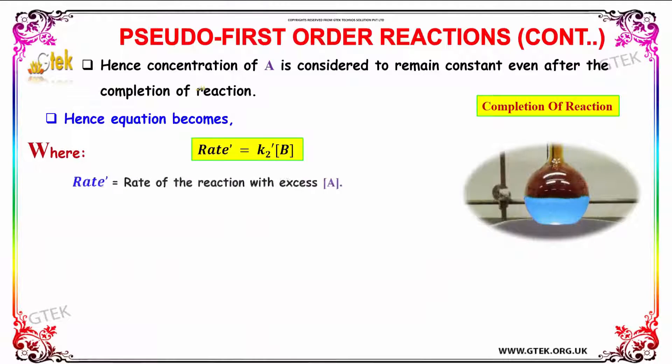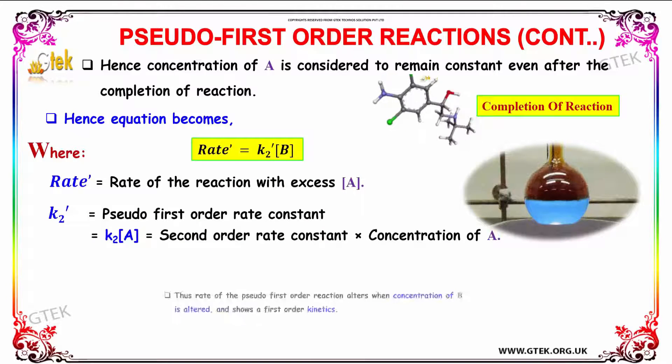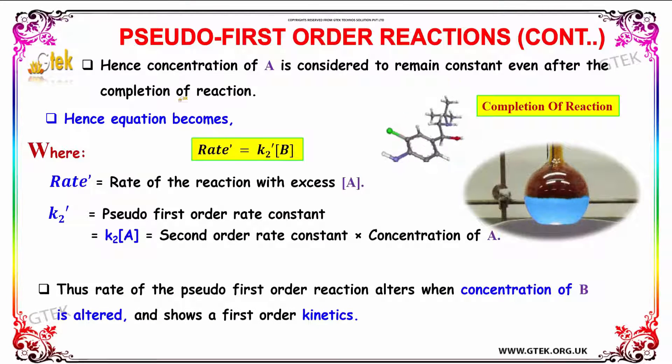Hence concentration of A is considered to remain constant even after the completion of reaction. So the equation becomes Rate' = k2'[B] where Rate' is the rate of the reaction with excess A. k2' is the pseudo first-order rate constant and k2' = k2[A], where k2 is the second-order rate constant times concentration of A.